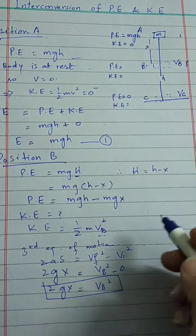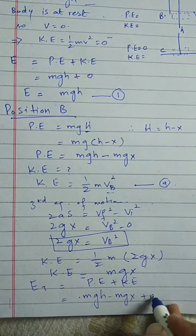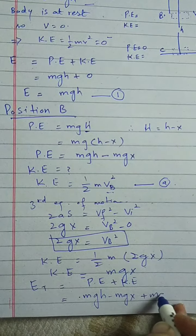Substituting vb² = 2gx into the kinetic energy equation: kinetic energy = half m × 2gx. The 2's cancel, giving kinetic energy = mgx. To find the total energy at position B: total energy equals potential energy plus kinetic energy = (mgh − mgx) + mgx. The mgx terms cancel, and we are left with total energy = mgh. This is equation number 2.